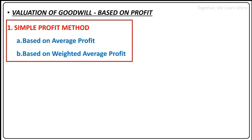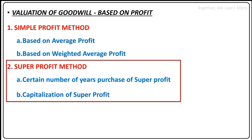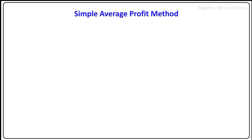Under Simple Profit Method we have two further methods: one based on Average Profit and another based on Weighted Average Profit. Average Profit is based on the last few years' data. Experts sometimes advise using the Weighted Average Profit Method, especially when weights are given and the profit trend is increasing.